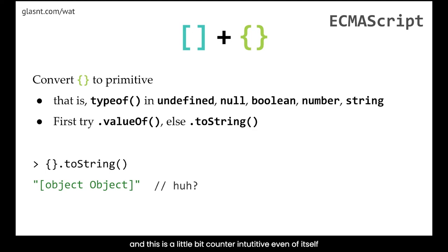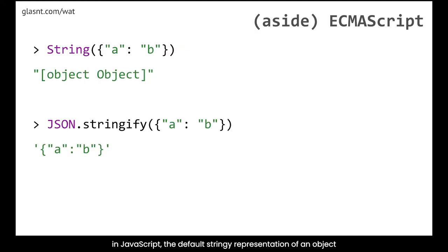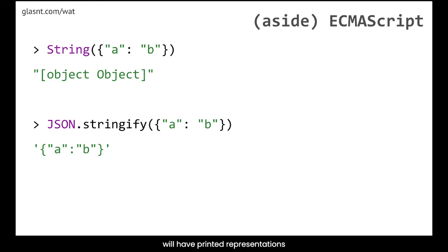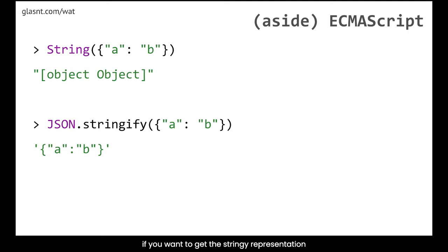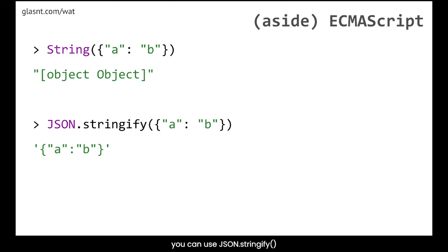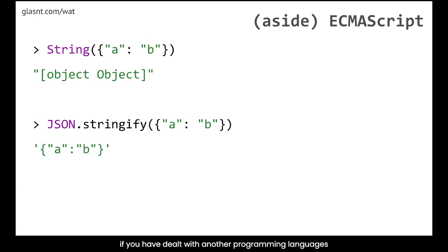This is a little counterintuitive: in JavaScript, the default string representation of an object is to declare 'yes, I am an object.' Many programming languages will have printed representations of the contents of dictionaries or objects that are more useful, but not so in JavaScript. If you want the string representation without altering the functionality of objects or doing any polyfills, you can use JSON.stringify, which will give you a more expected output.